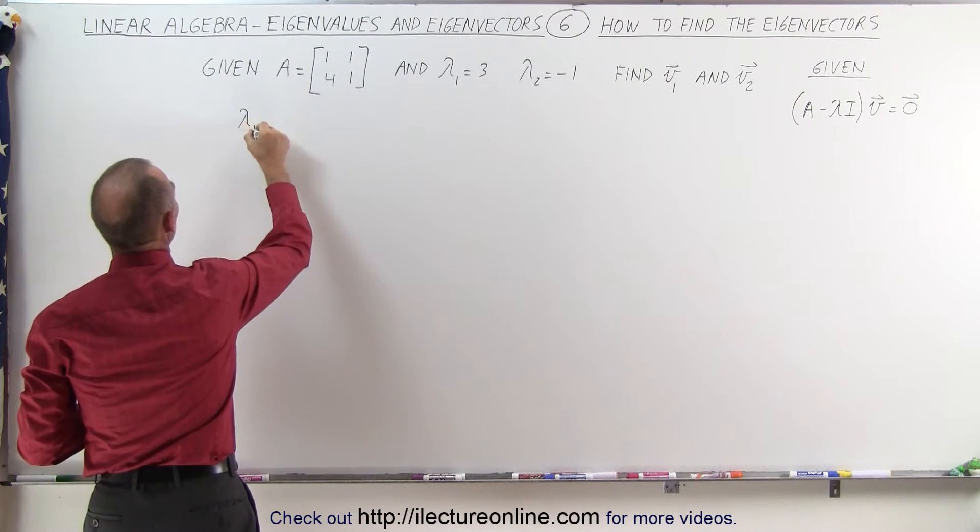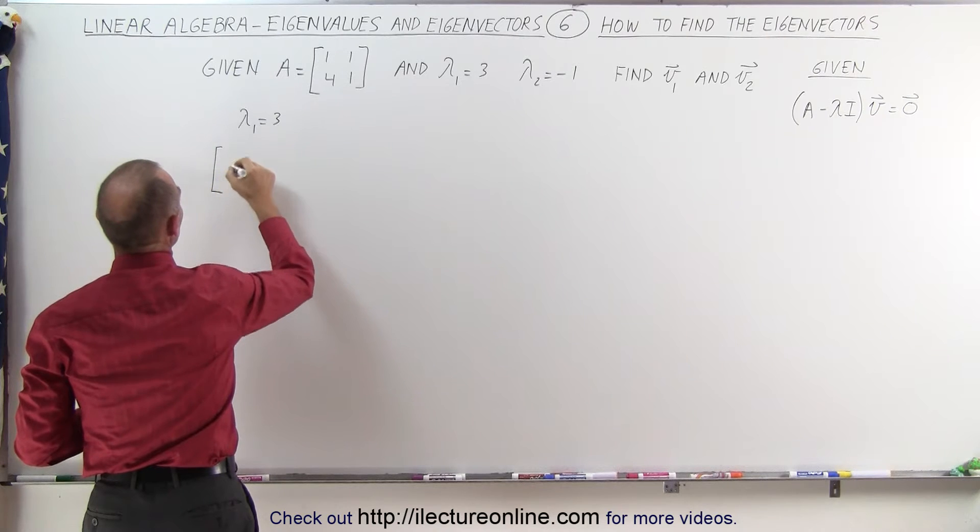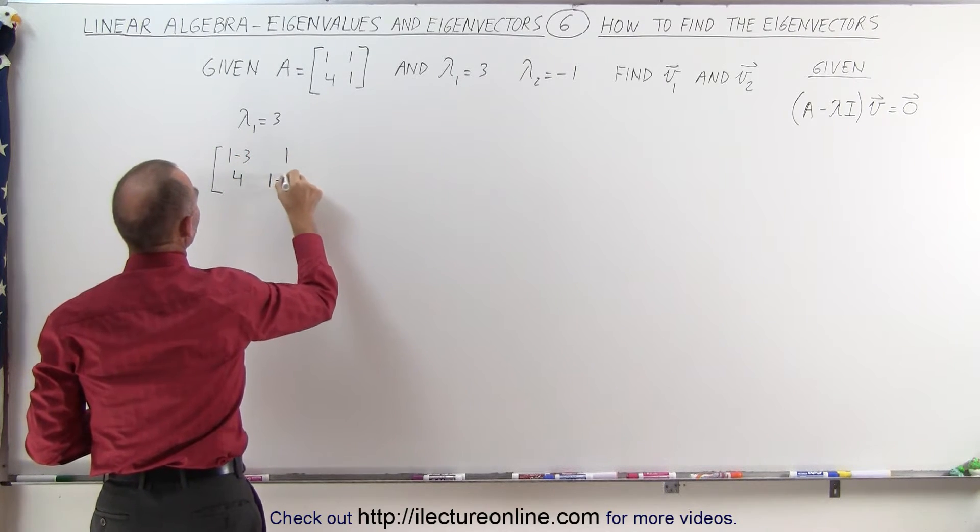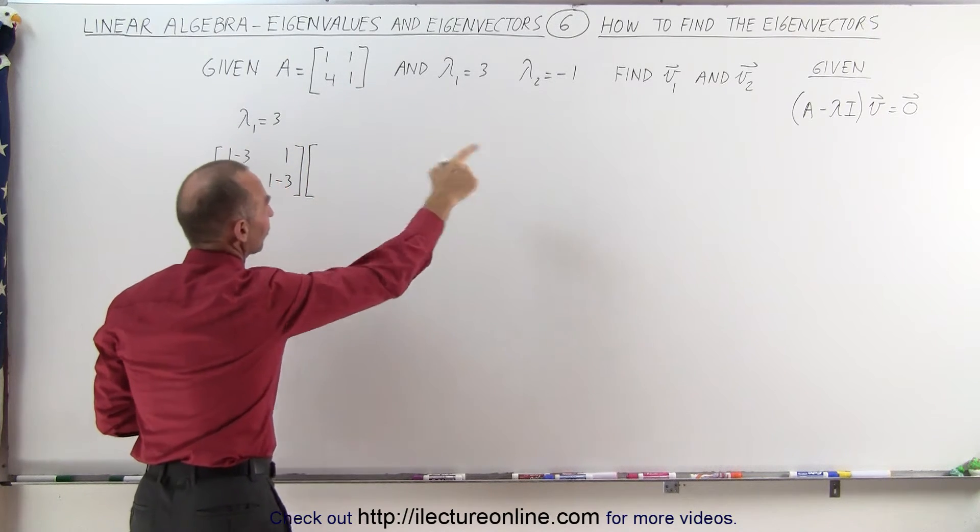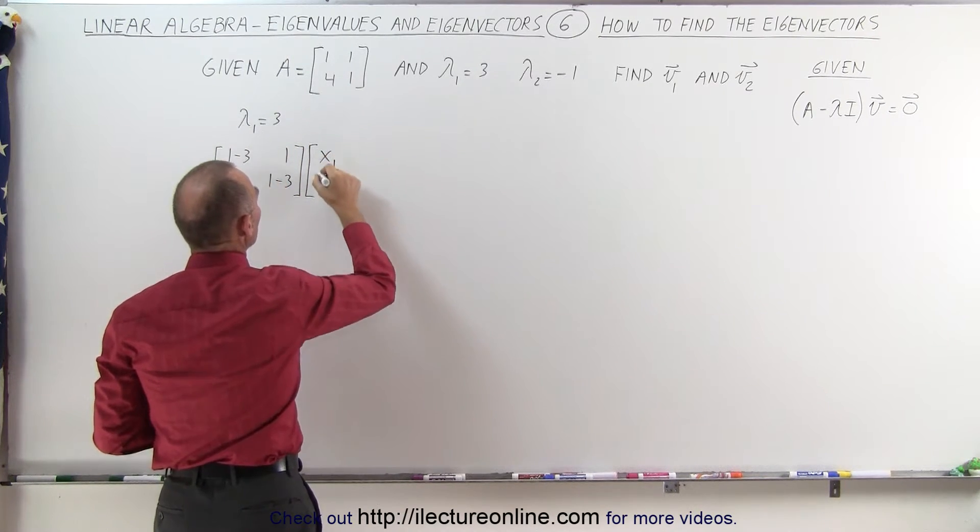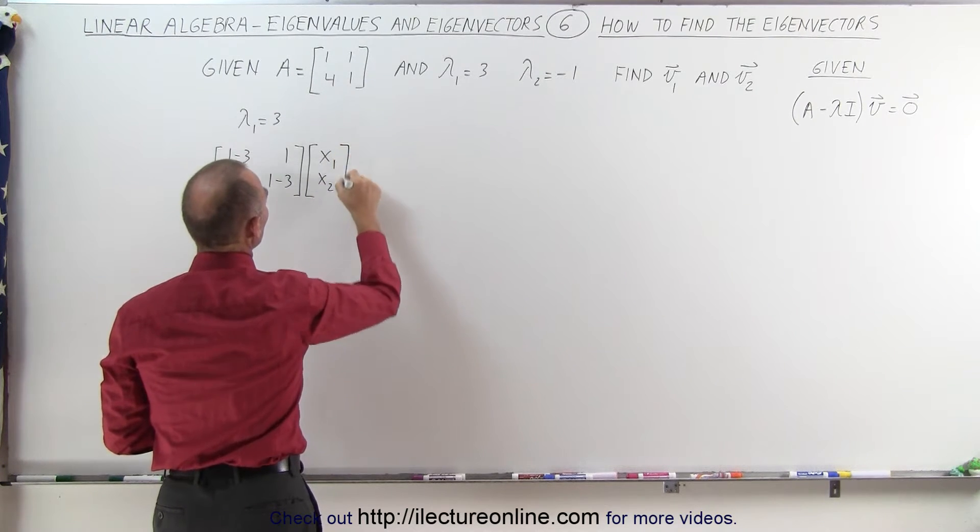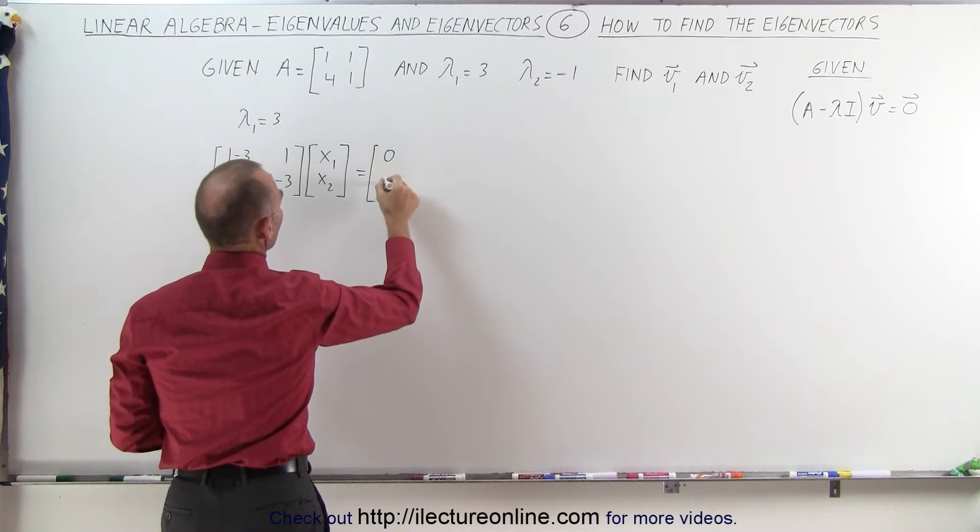So using lambda 1 equals 3, we end up with this matrix here. We end up with 1 minus 3, 1, 4, 1 minus 3. We multiply that times the vector v1, which will contain the two generalized variables x1 and x2, and that is set equal to the null vector, which can be written like this.